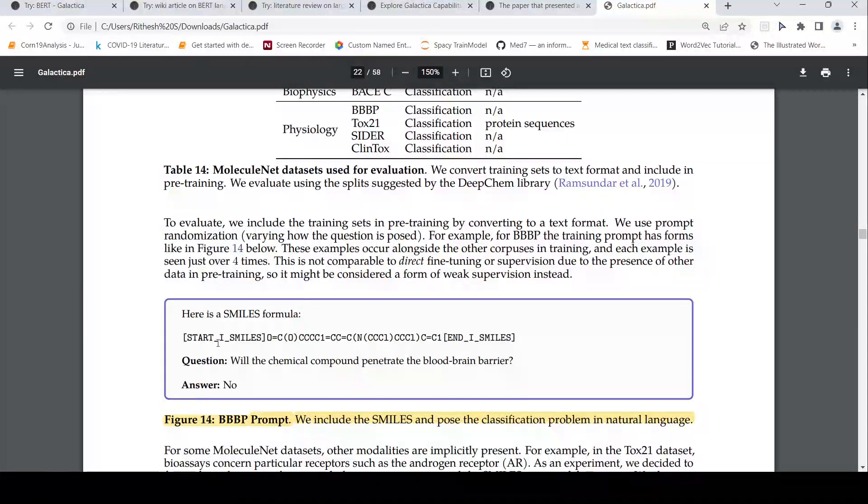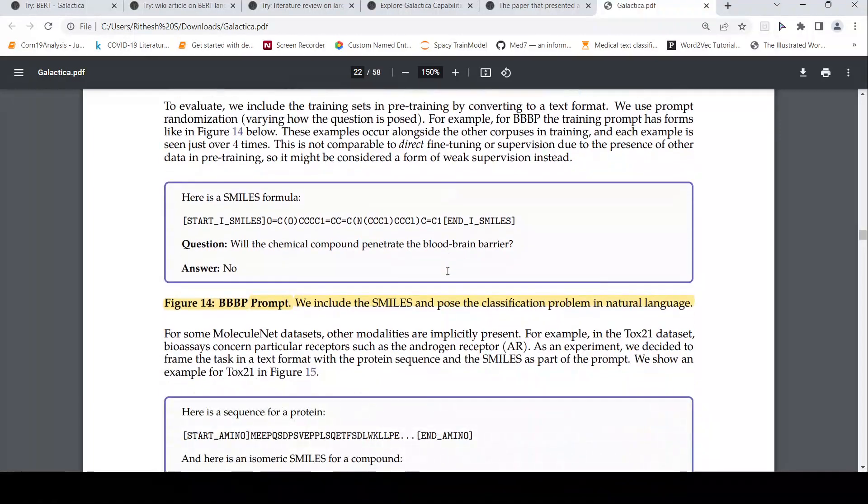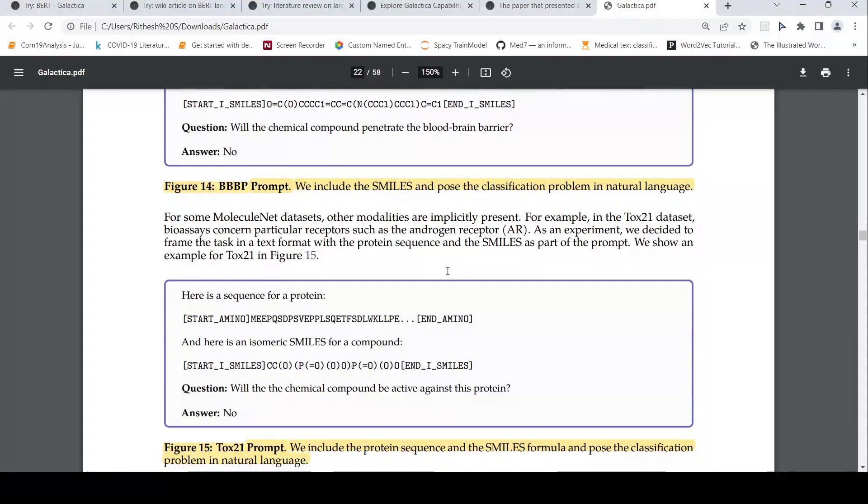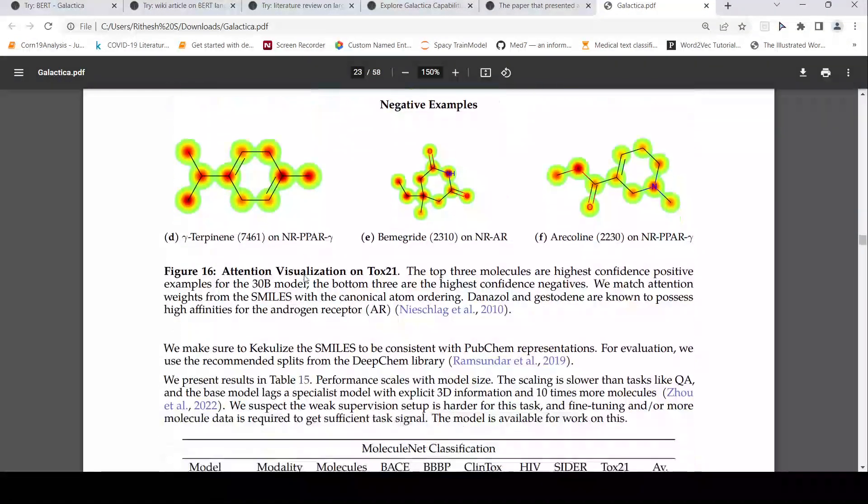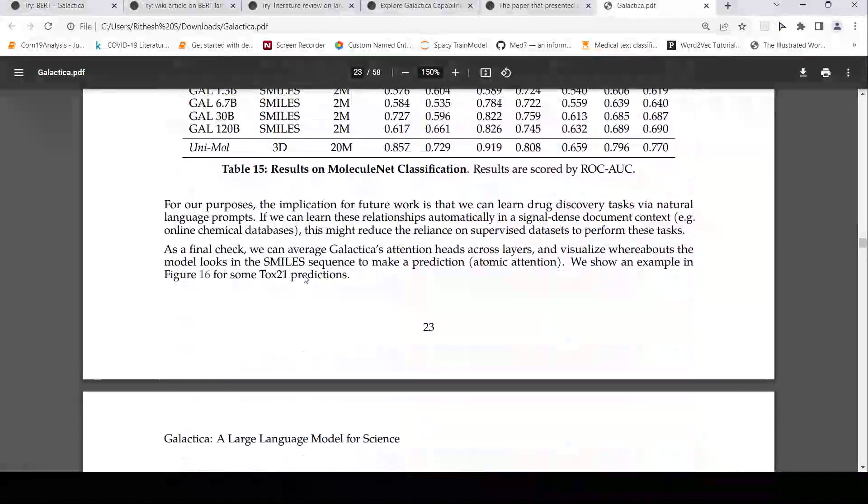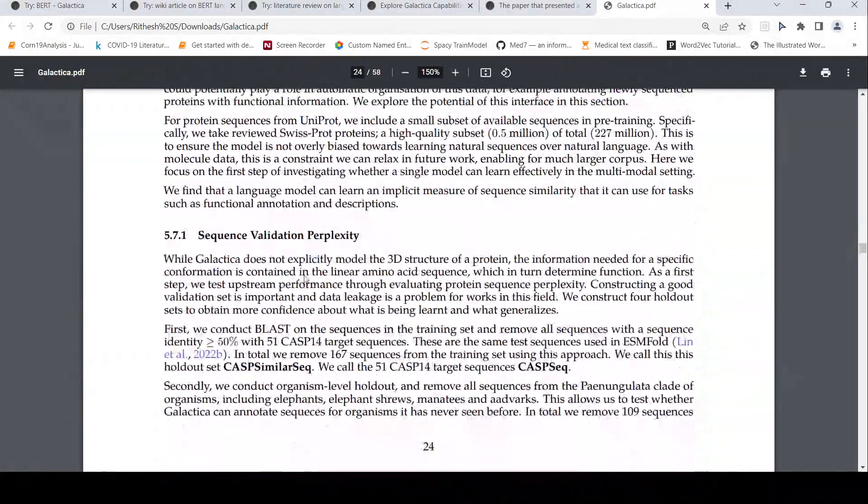Then you also have some molecule properties. For example, this is a SMILES formula. And then there is a question, will the chemical compound penetrate the blood brain barrier? The answer is no. So this is basically some kind of drug design kind of things where you can have a chemical formula. And then you can ask like, will the chemical compound be active against this protein? So here is a protein. And here is a chemical formula. And then you can say that whether this chemical compound will be active against this protein. And the answer is generated. So this is basically for toxicity and other things. So this is also cool about molecules.